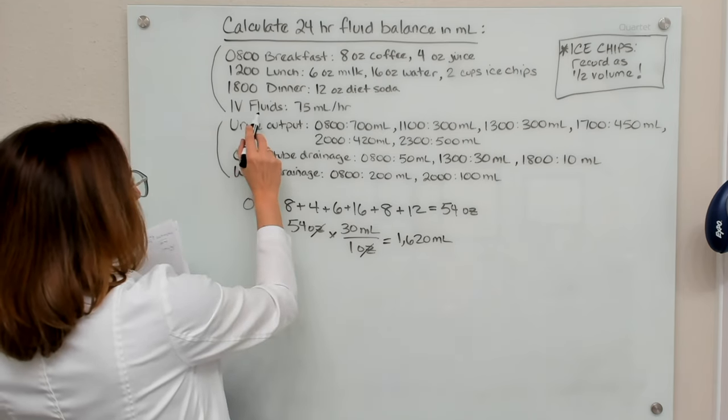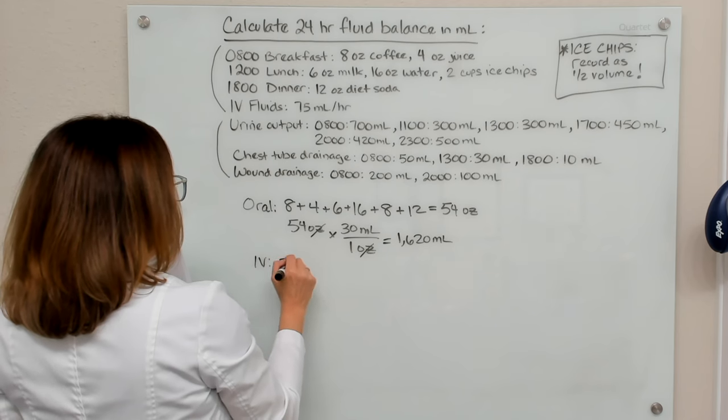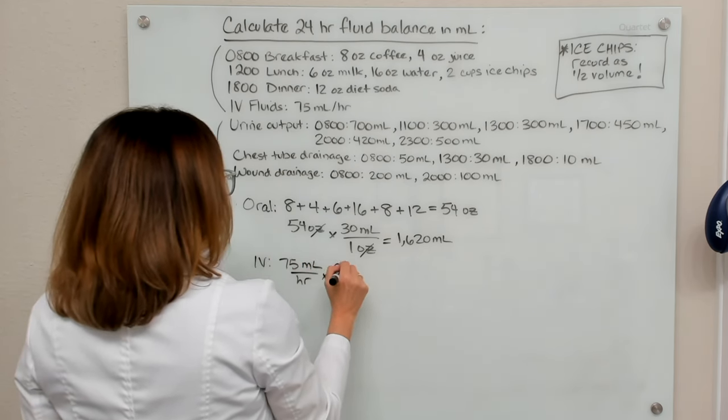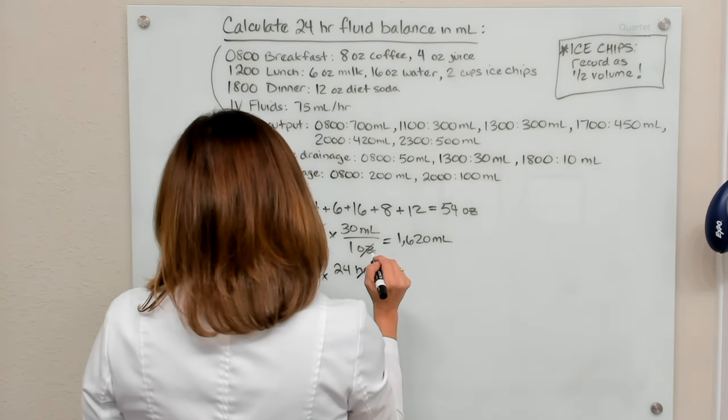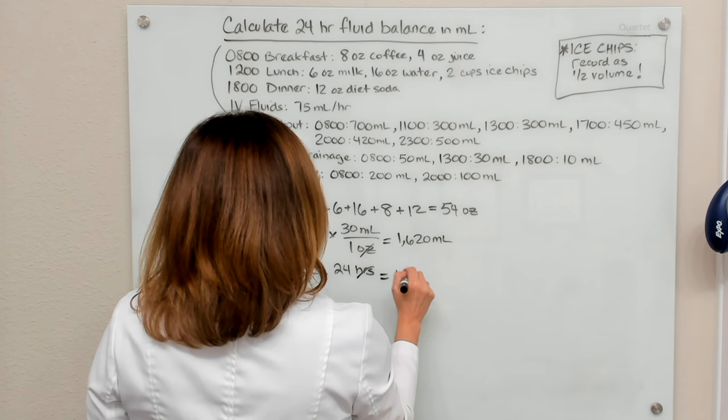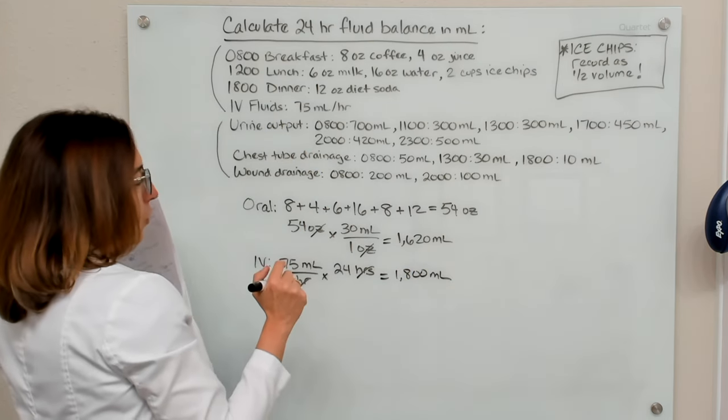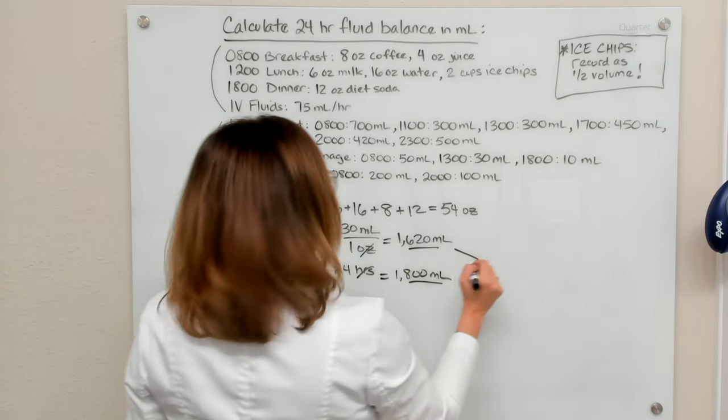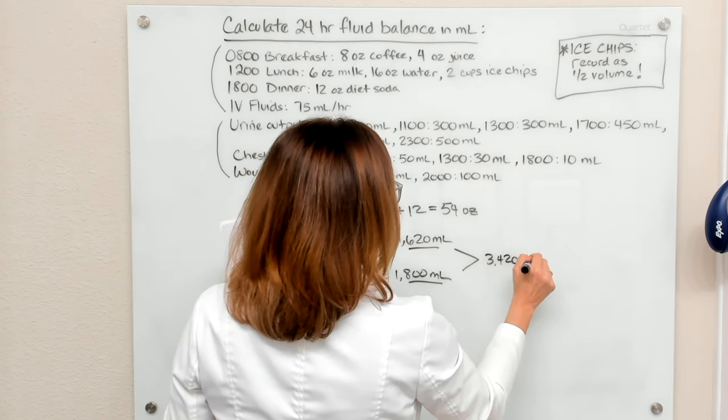So that's the patient's oral intake, but they also have IV fluid intake. So for the IV fluids, those are running at 75 milliliters per hour times 24 hours. This equals 1,800 milliliters. So their total intake will be this number plus this number. So if we add these two together, we get 3,420 mLs.